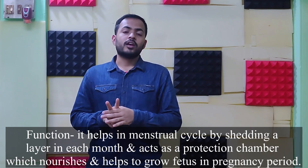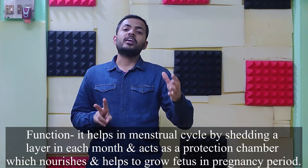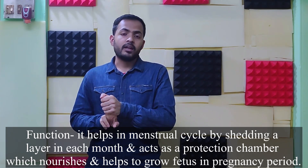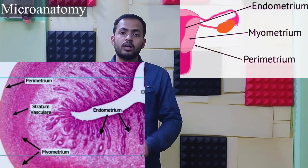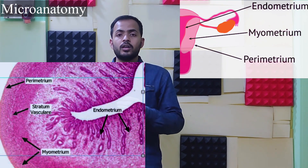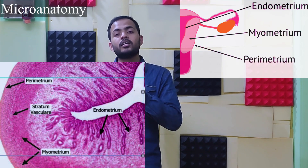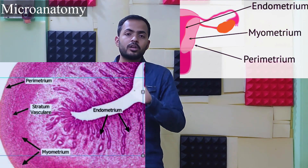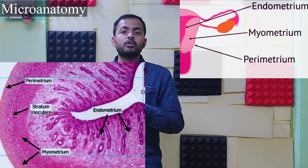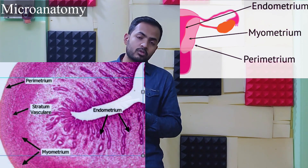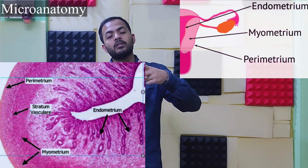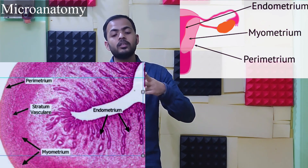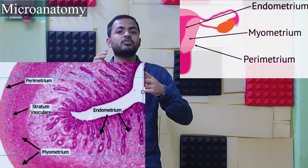The uterus has two main functions: it helps in menstruation, as one layer sheds each month during the menstrual period, and it acts as a protection chamber where it nourishes and helps grow the fetus during pregnancy. In microanatomy, the uterus has three layers: the inner endometrium, the middle myometrium, and the outer perimetrium. The perimetrium is a peritoneal layer. The myometrium consists of smooth muscle along with modified elastic and fibrous tissue. The endometrium has two sub-layers: the basal layer, which remains fixed, and the functional layer, which sheds every month during menstruation.